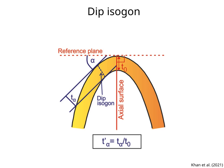We can measure the thickness perpendicular to the direction alpha, or t-alpha. This is the true thickness of the layer. We can also measure the thickness of the layer at the hinge of the fold and along the axial surface — this is the thickness t0. T-alpha-prime is the ratio of t-alpha and t0.